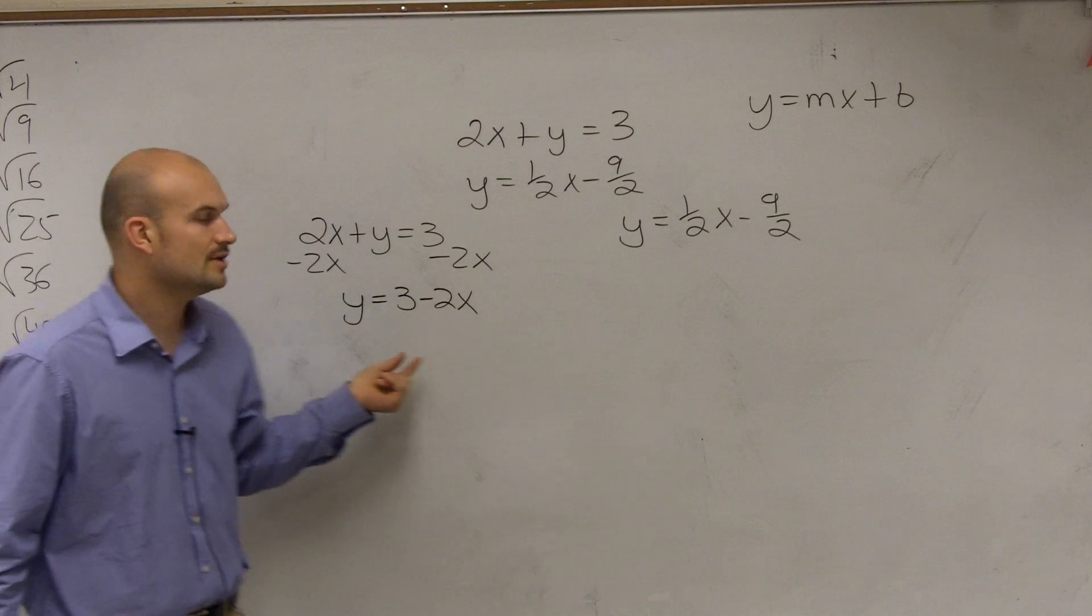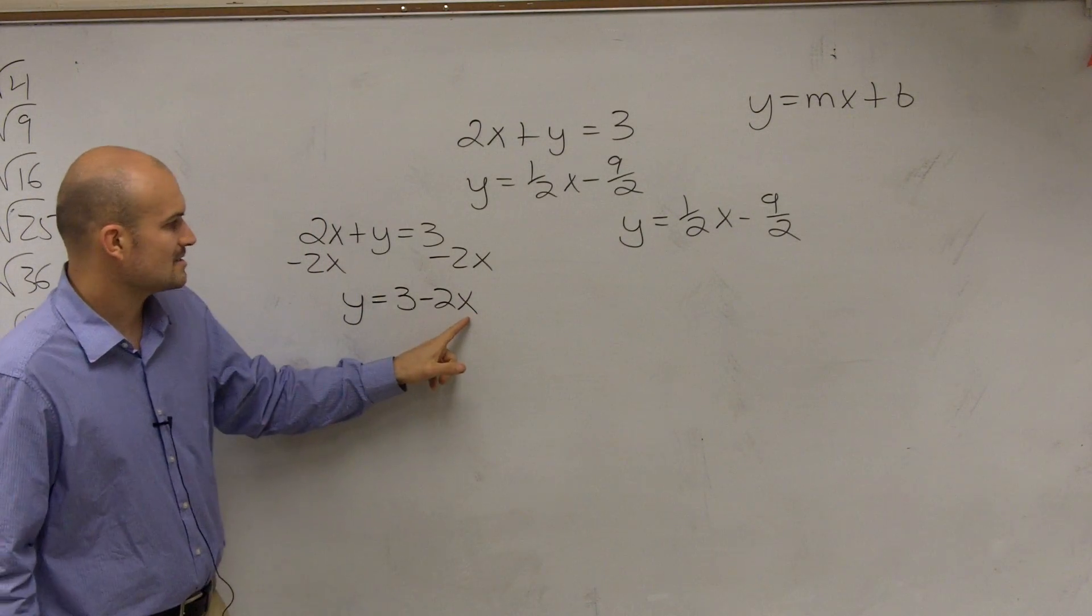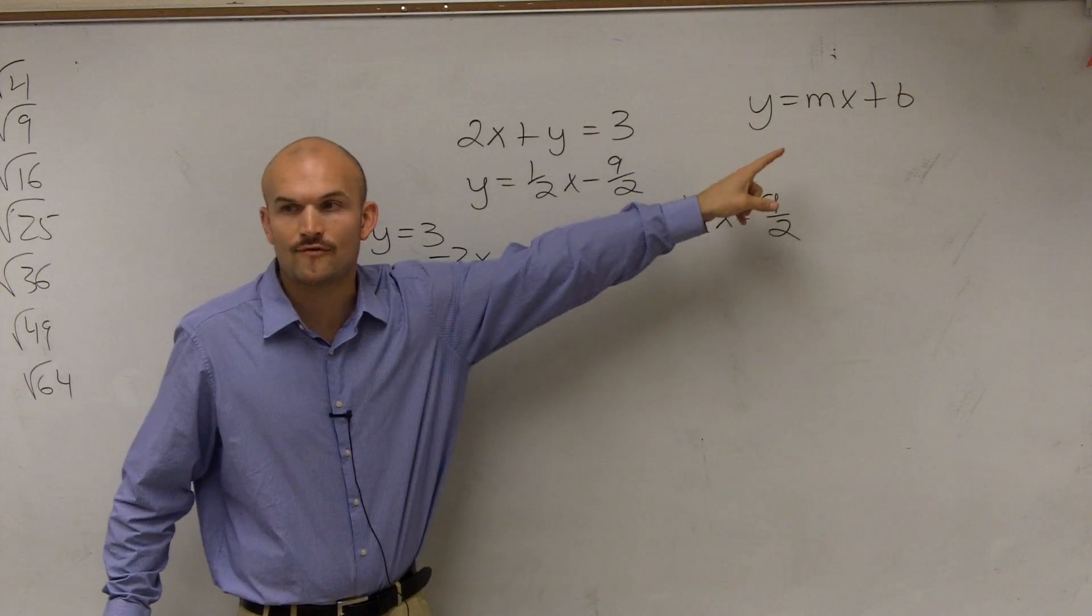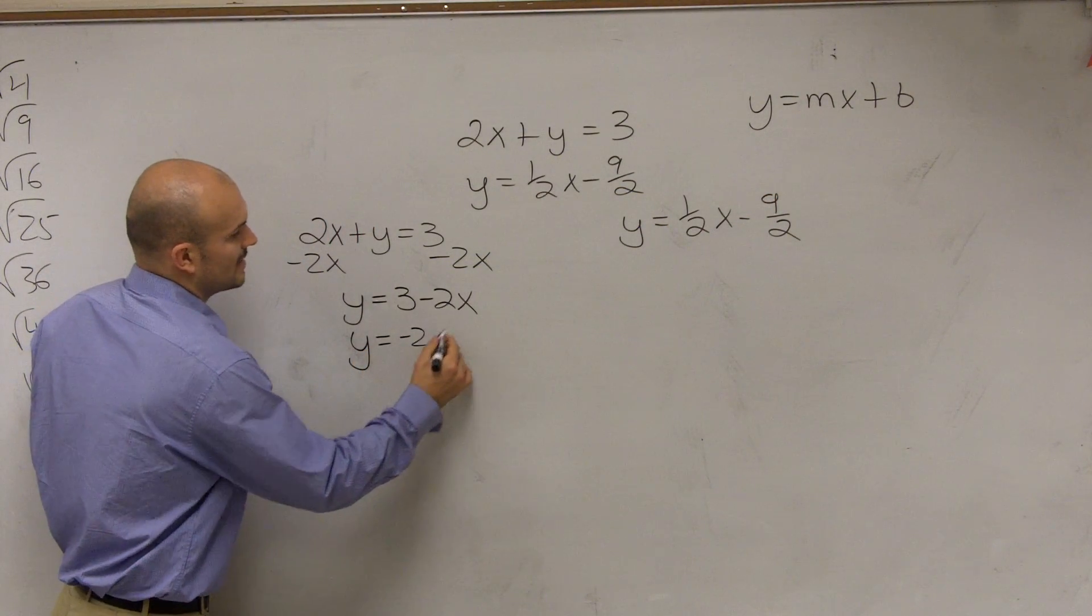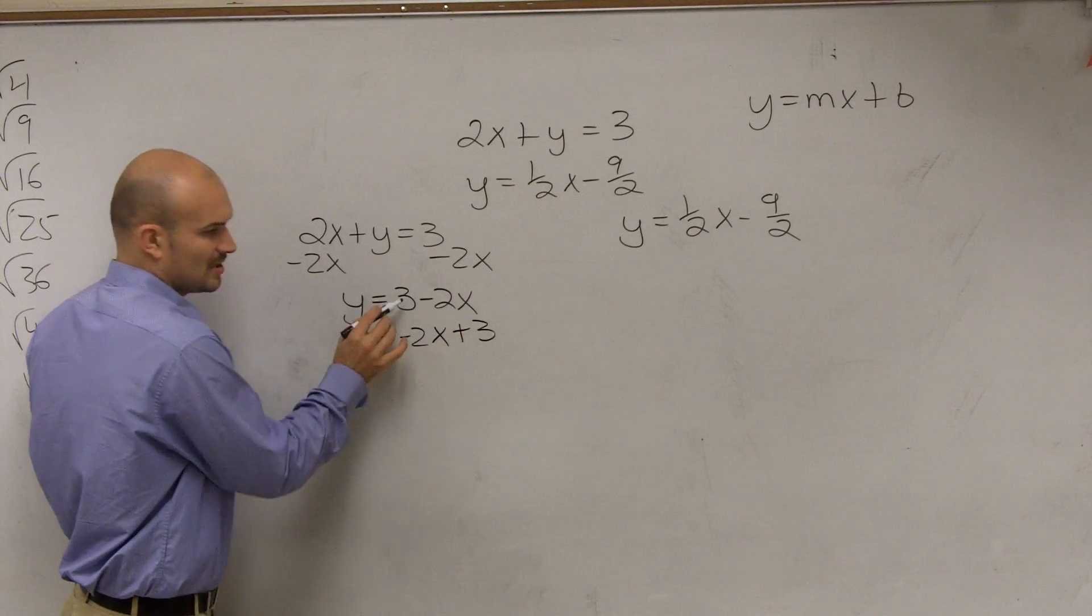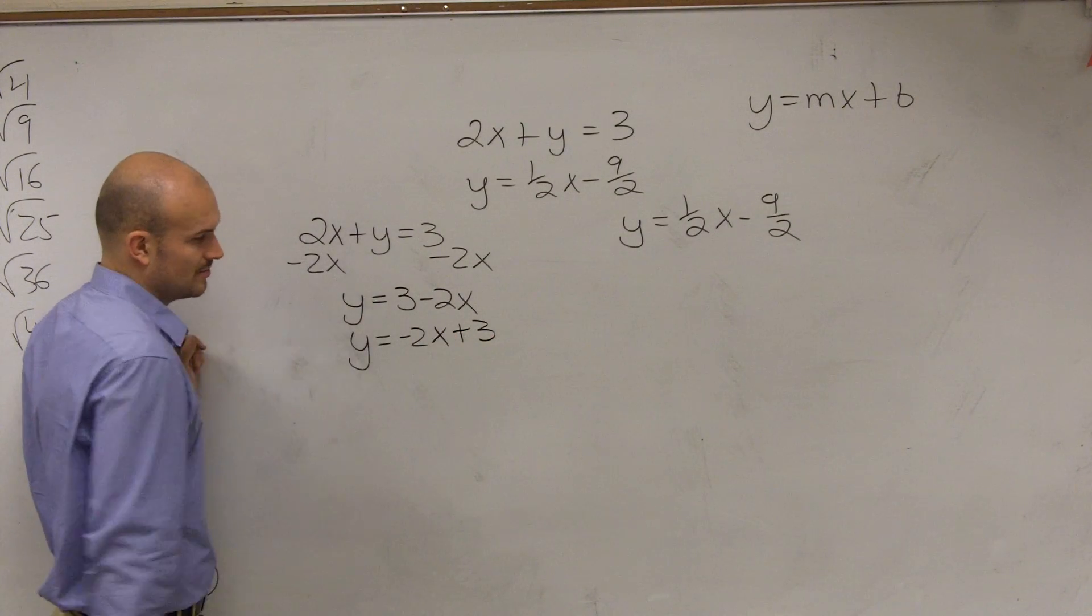The y is by itself. However, when you look at this, Mallory, the x, these should be switched around if it was going to look like in that form. So what I'm going to do is I'm going to rewrite it as y = -2x + 3.